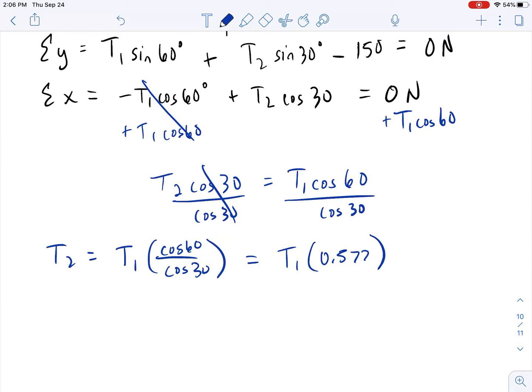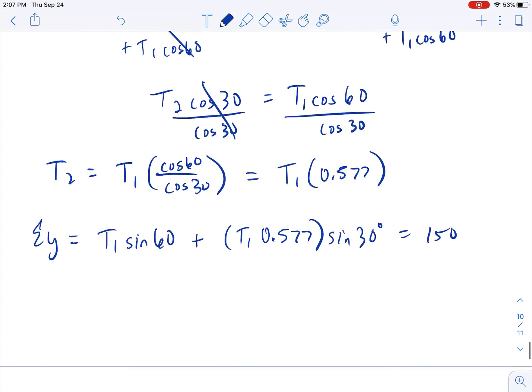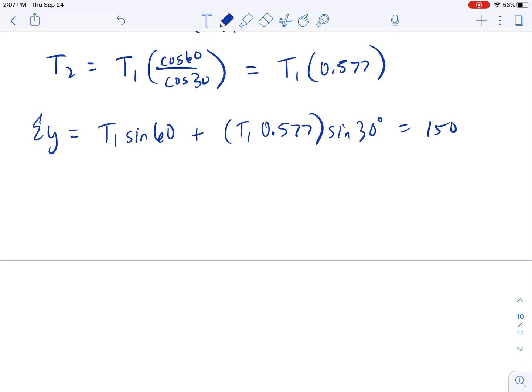So if I go back to my total Y equation, so T1 sine of 60 plus, and here's where I'm going to make that substitution, where I'm going to substitute this T1 0.577 in for that T2. So it's going to look like this. It's T1 times 0.577 times the sine of 30 degrees. And I'm going to just kind of swing this on the other side. So add 150. So that's going to equal 150. All right. Now we're just a means of combining like terms.